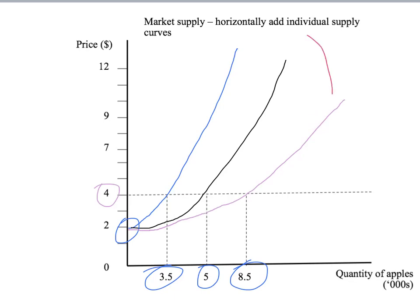This purple line is our market supply curve. Notice it's flatter than the individual supply curves and lies to the right of both, since it has more total sales at any price. Holding fixed all other factors — input prices, expectations, technology — this purple curve tells us, given the price, how many apples in total sellers would like to sell. Now that we have demand and supply, in the next presentation we'll put them together and predict the price of apples — answering where the price of apples comes from. See you next time.